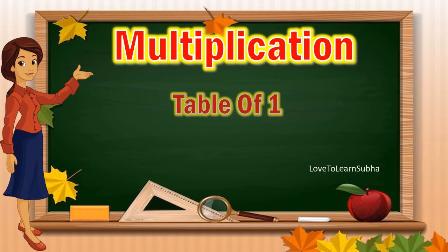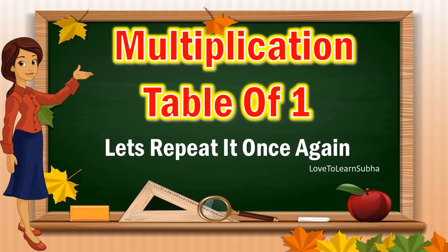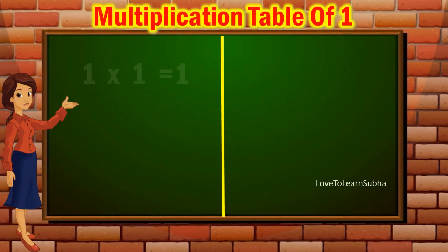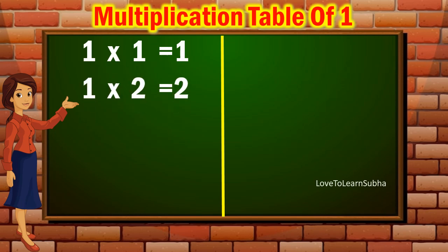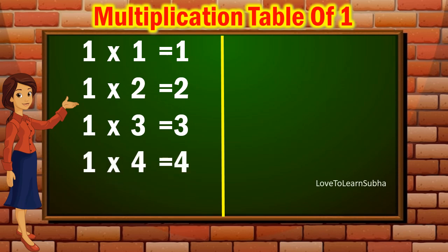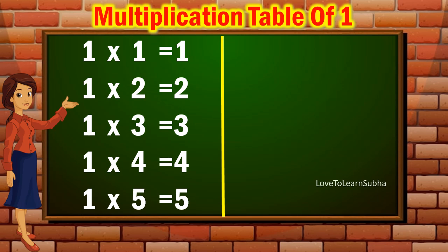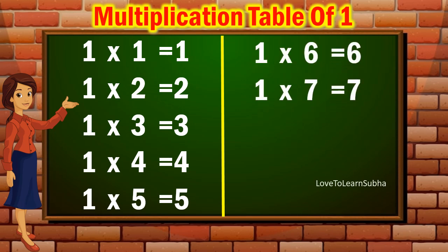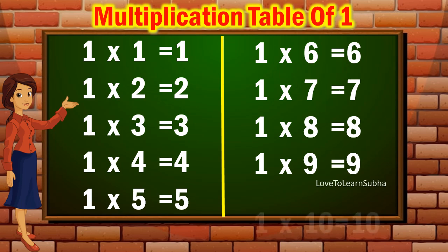Now, let's repeat it once again. 1-1s are 1. 1-2s are 2. 1-3s are 3. 1-4s are 4. 1-5s are 5. 1-6s are 6. 1-7s are 7. 1-8s are 8. 1-9s are 9. 1-10s are 10.